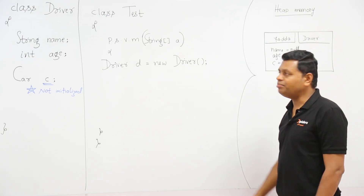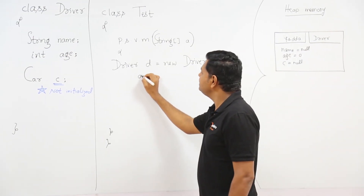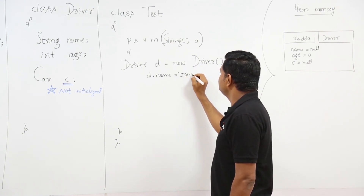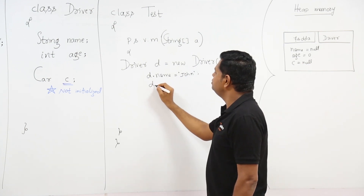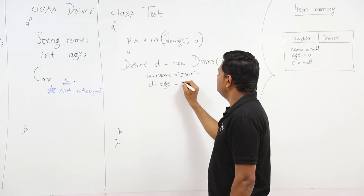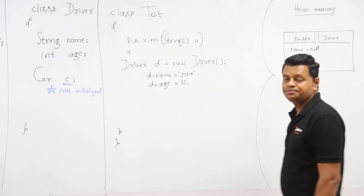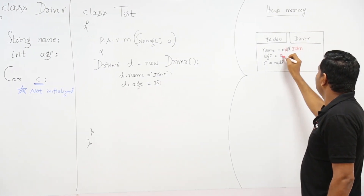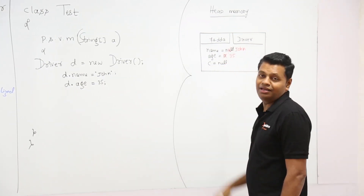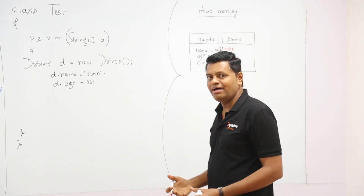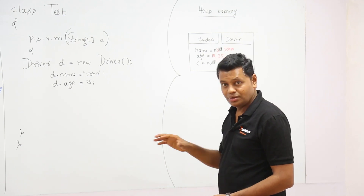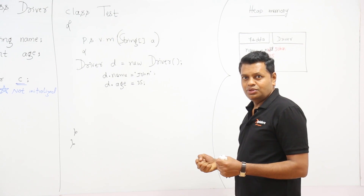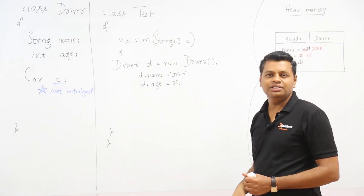Now I initialize the driver properties in the test code: d.name = "John" and d.age = 35. In memory, the null value for name becomes John and age becomes 35, but car c is still null — meaning the driver does not have a car yet. Now I need to create a car object because the driver requires one.